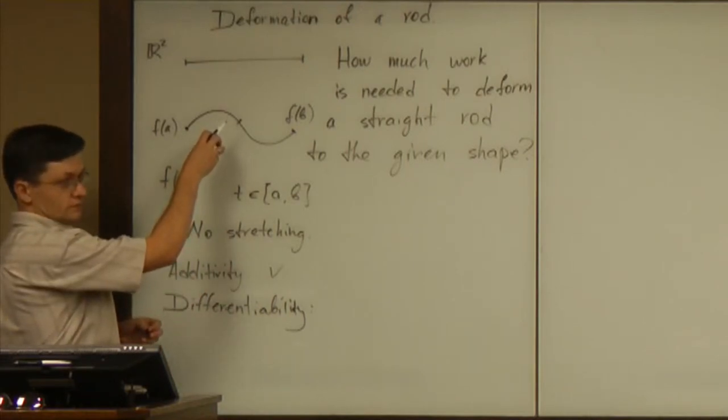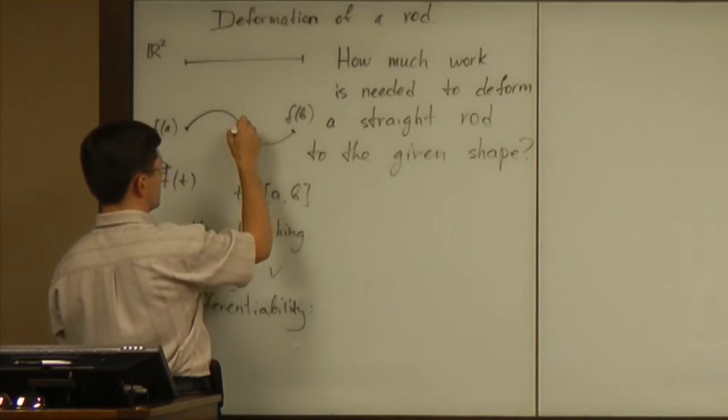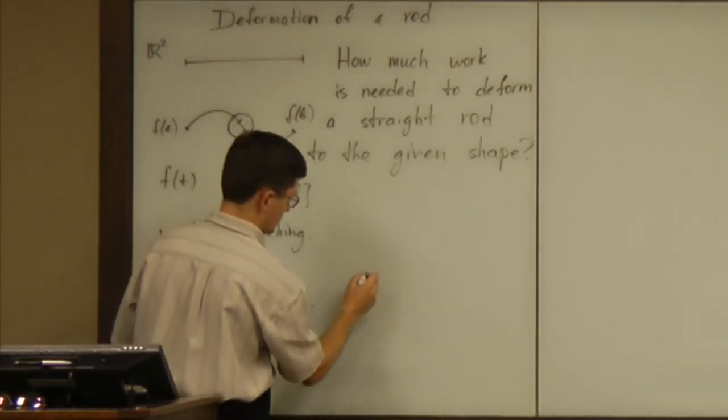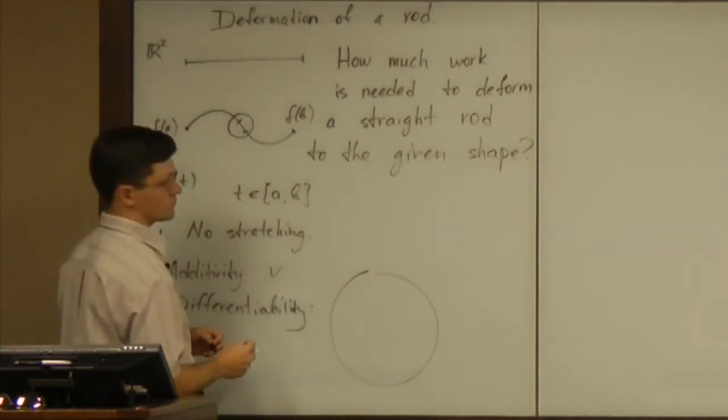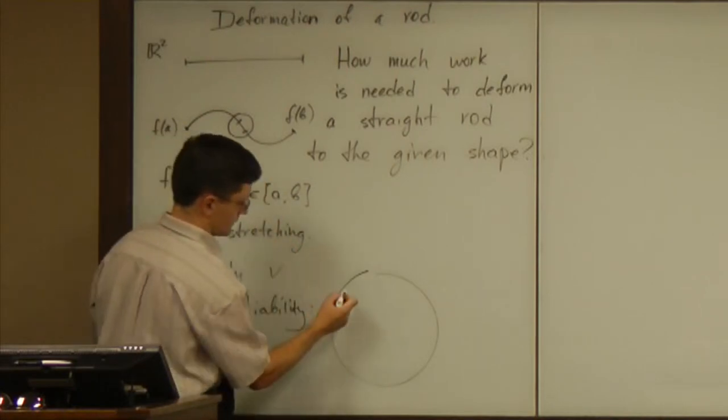So what do we do? We zoom in. We zoom into this small short piece. And what do we observe in that short piece? Well, it's almost straight.